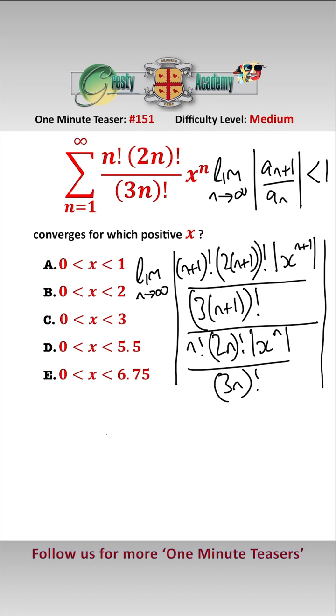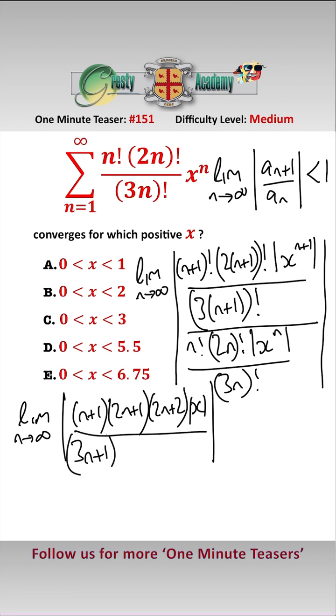Now this does look hairy but most of it cancels out and that simplifies to being the limit as n approaches infinity of n plus 1, 2n plus 1, 2n plus 2 mod x over 3n plus 1, 3n plus 2, 3n plus 3.